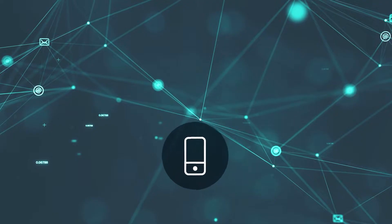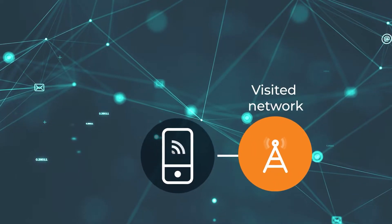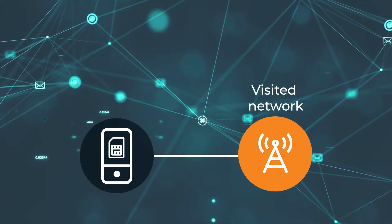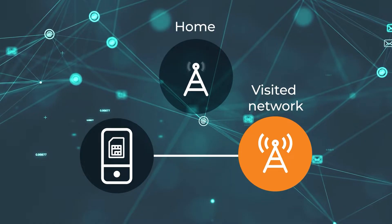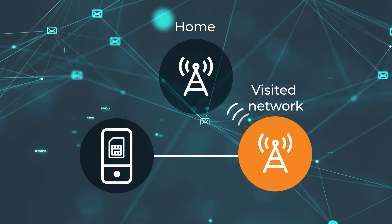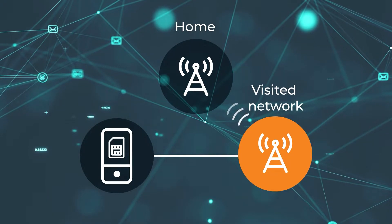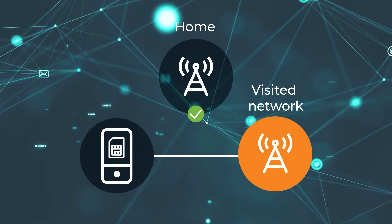The first thing that happens when you travel to a different country is that your phone scans for available networks. If your home network — meaning the mobile operator who issued the SIM card — is not present, then your phone will try to register with the available networks, scanning and connecting with each one by one. One of those local networks will receive the signal and send a request to your home operator to confirm that your phone is allowed to use services in roaming.